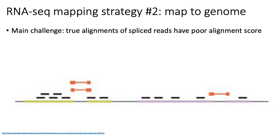The second approach is to take reads and map them back to a reference genome — just align each read to the genome and hope that most reads align uniquely. The main challenge is that reads mapping entirely within one exon may be alignable, but the bigger problem are reads that span splice junctions.